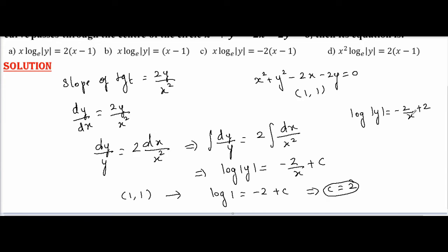When we multiply throughout by x, it is x log mod y equals minus 2 plus 2x, or 2 into (x minus 1). That is x into log mod y equals 2 into (x minus 1). This is option A.